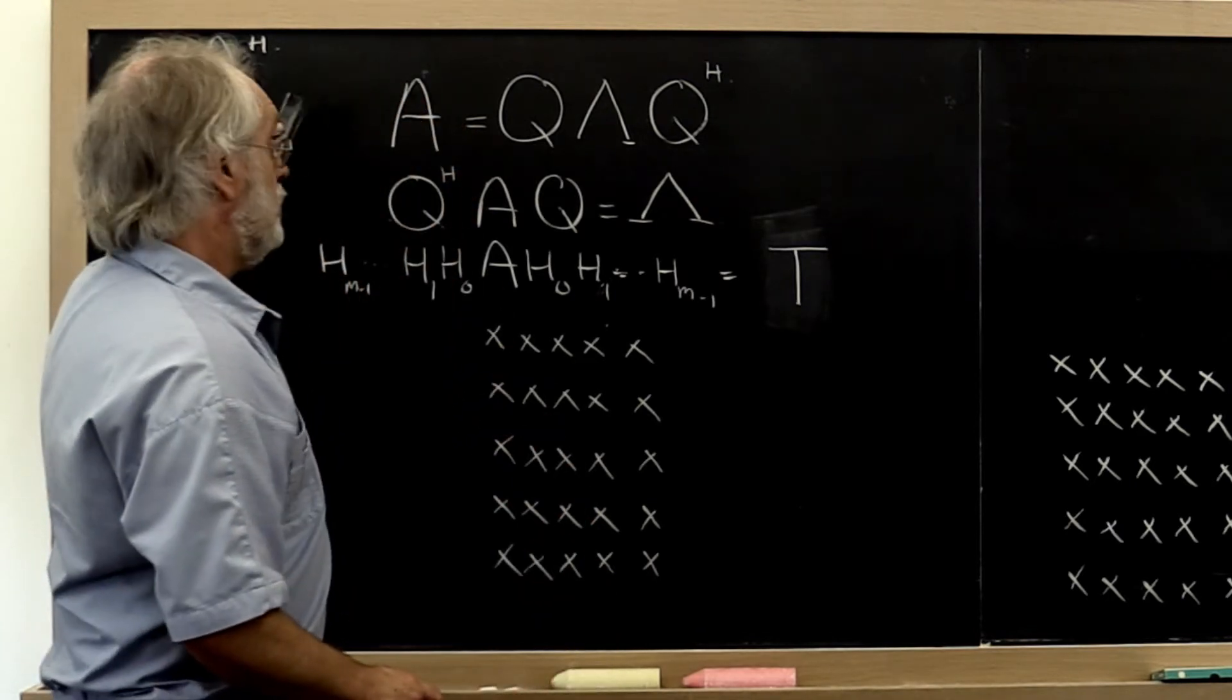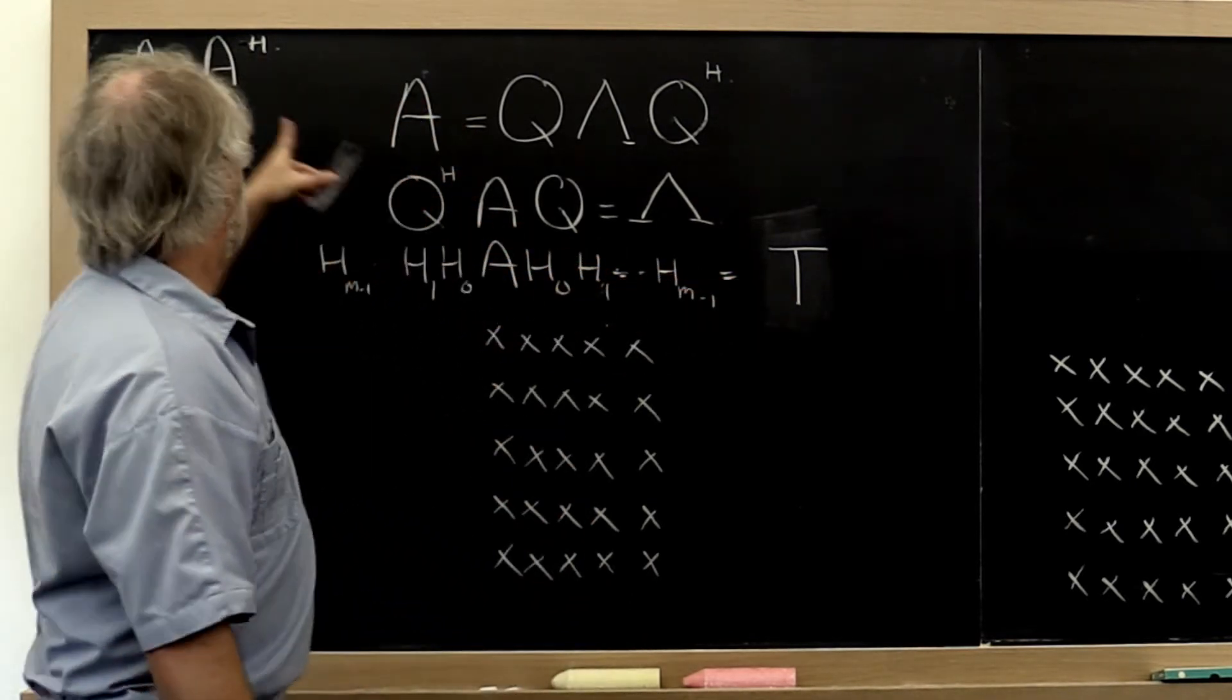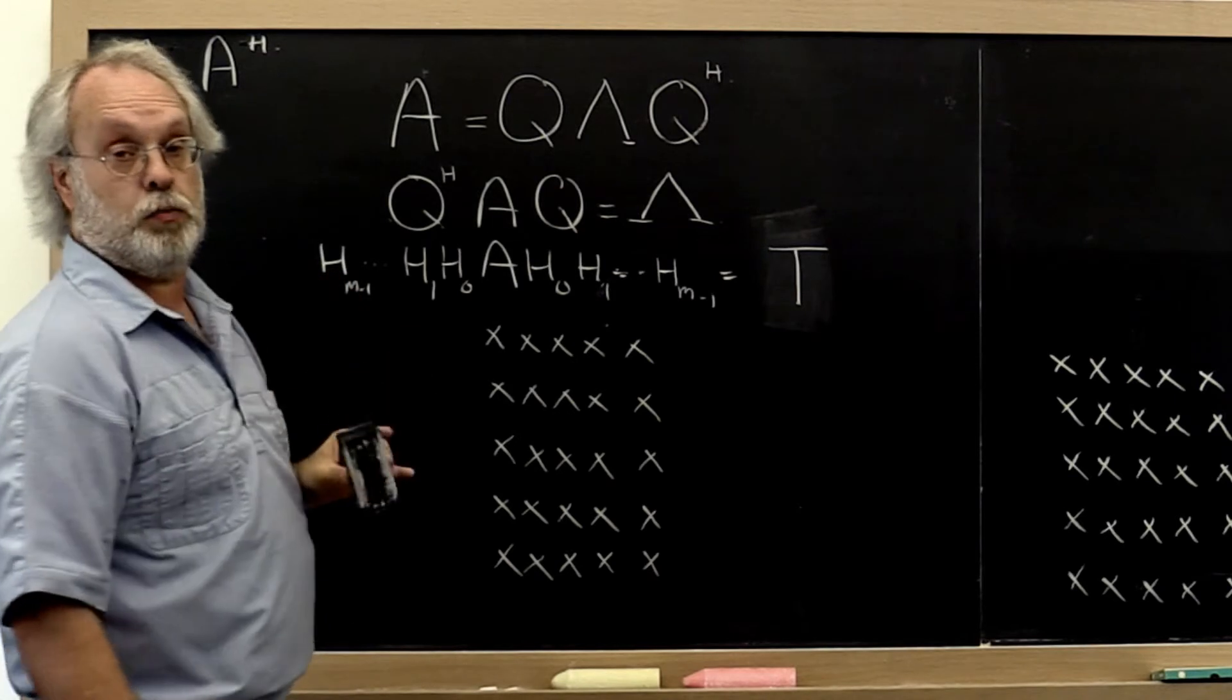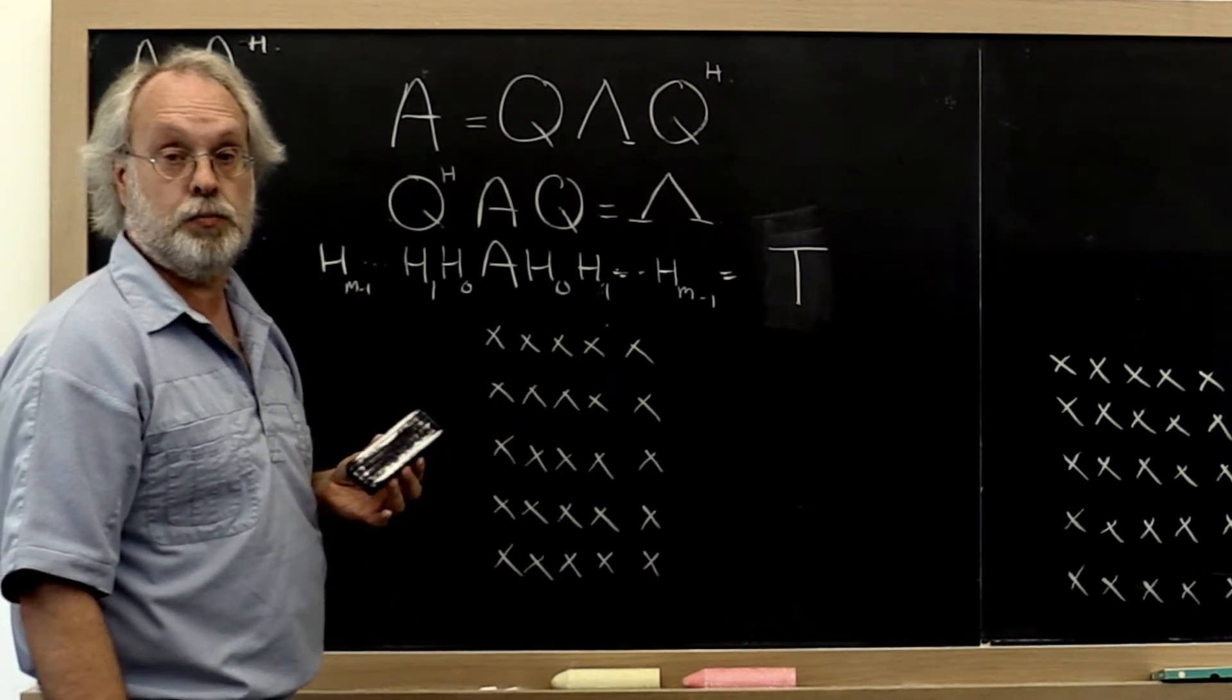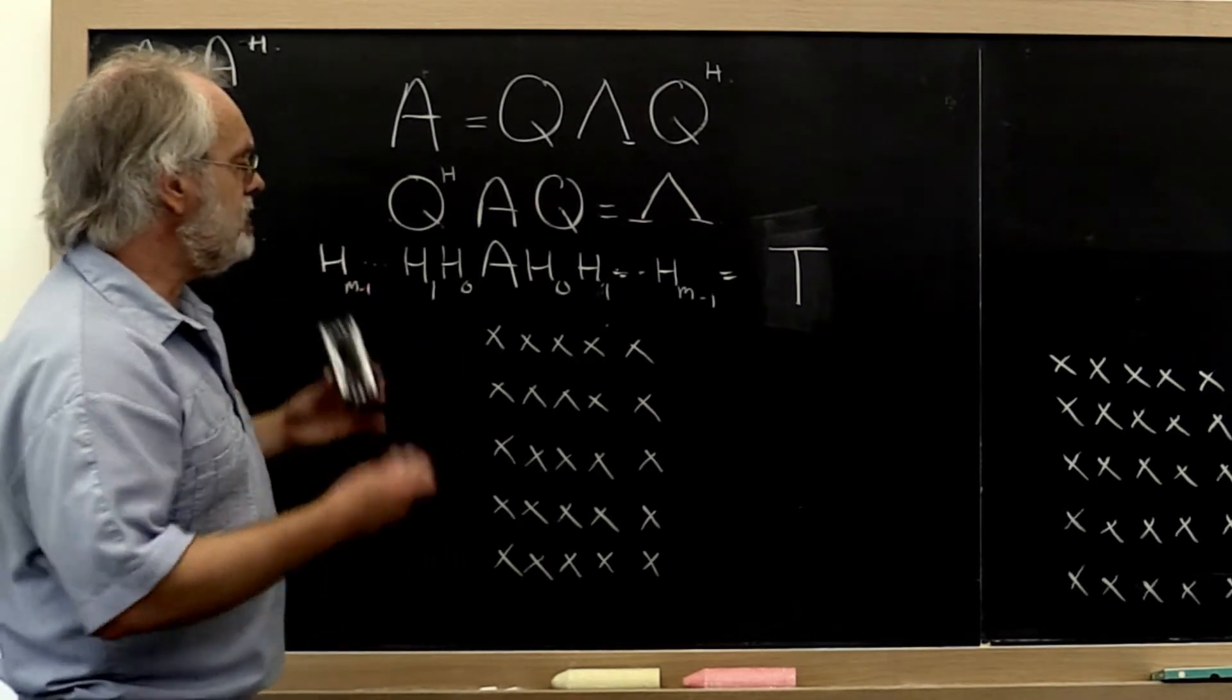Notice that it will be a tridiagonal matrix because of the Hermitian symmetry involved, the fact that matrix A is a Hermitian matrix. And how does this work?